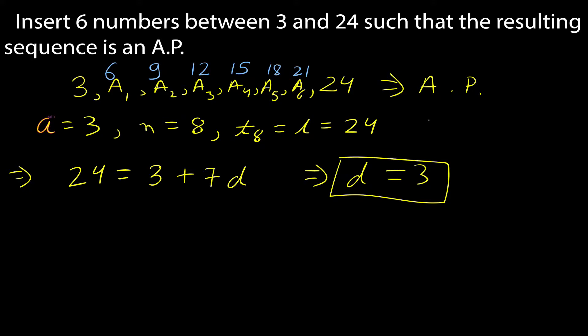You can now take any two numbers you like and insert whatever number of terms you want between them. Ask your younger brother or sister for three favorite numbers — use the first and last as endpoints and insert the third number of terms between them to form an arithmetic progression. Good luck with that!